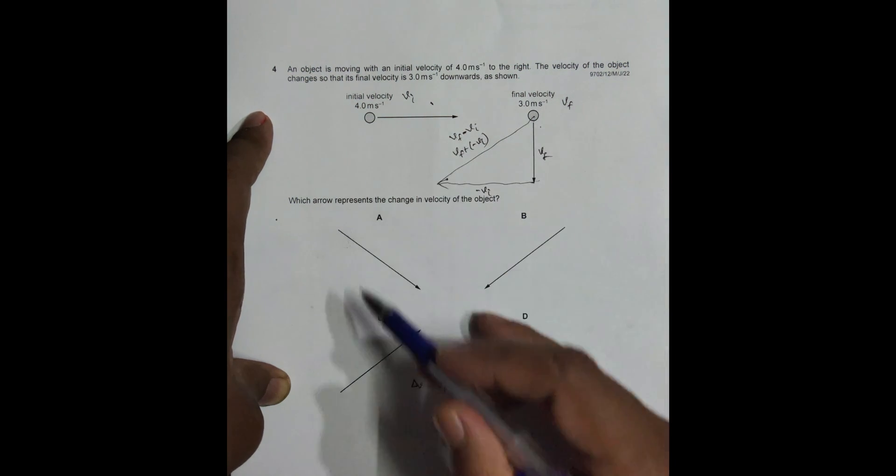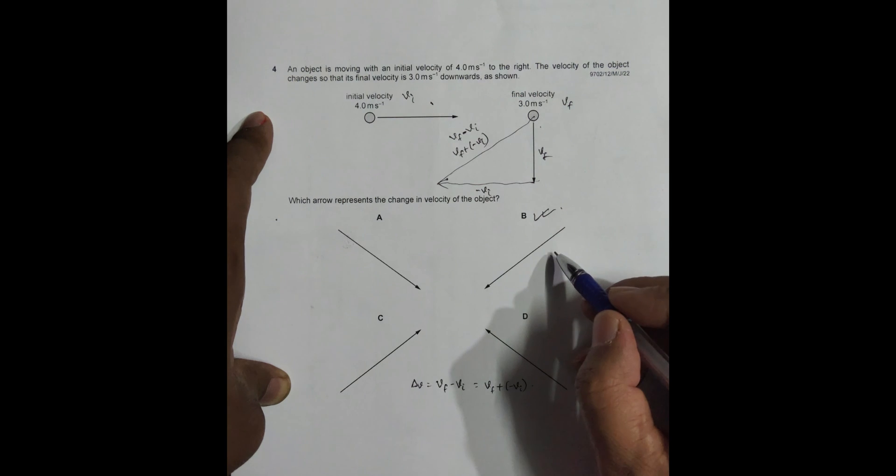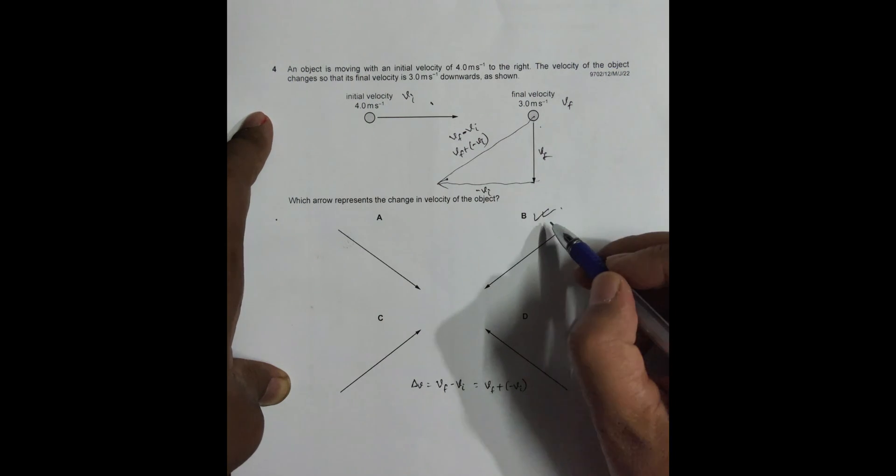So from this diagram, what you can see is this is the correct choice. So this shows, this enables this. So this is the correct choice.